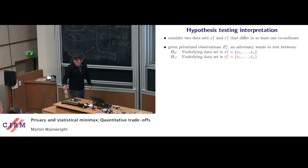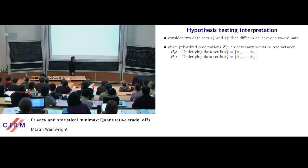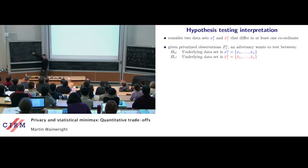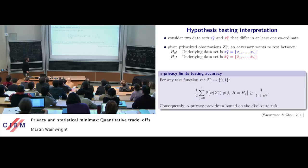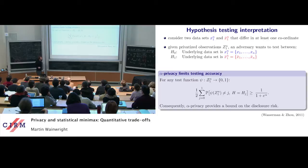For a statistician, here's a nice interpretation developed by Shuheng Zhou and Larry Wasserman. What does this notion of privacy guarantee? We have two data sets that differ in one coordinate — Hamming distance equal to one. An adversary observing the privatized data vector wants to solve the testing problem of distinguishing between these data sets. If they could, they could answer 'are you HIV positive or not?' What alpha local privacy says is it gives you a lower bound on the testing error uniformly over any test: the probability of error is at least 1 over (1 + e^alpha).